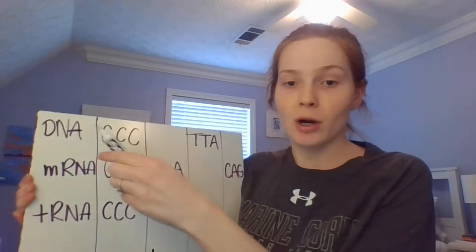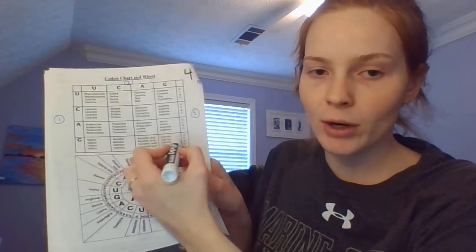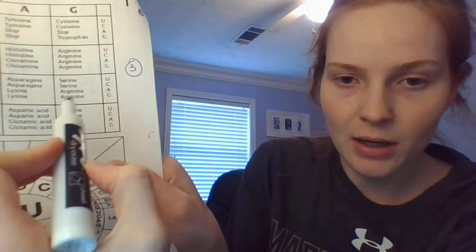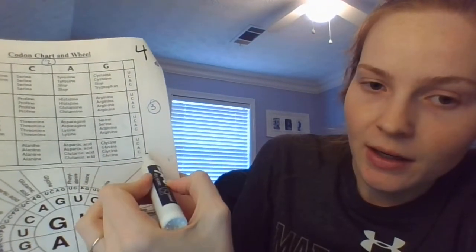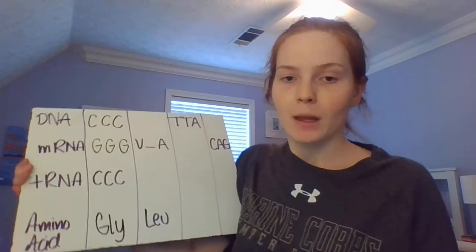Now which one do we use to find the amino acid? It's a codon chart, so you would use the mRNA because this is the codon. Our codon is GGG, so go to your codon chart. First base is G — it's somewhere in this row. Second base is G — where those intersect it's somewhere in this box. Third base is G — so you know that this is glycine. Write it using the first three letters to shorten it.